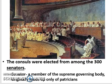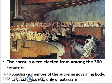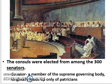The consuls — those two rulers — were elected from among the 300 senators. A senator is a member of the supreme governing body, originally made up only of patricians. Senators were responsible for making laws and making sure everyone was represented. Originally, senators were only patricians, so nobody from the plebeian class could be a senator or a consul either, since consuls were elected from the Senate. Over time, however, that would change.